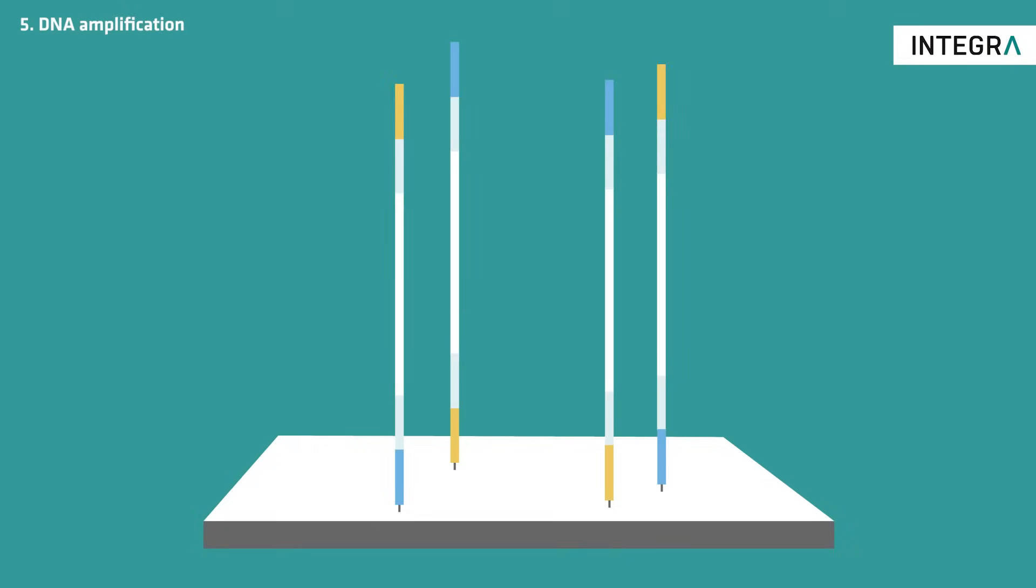Once there are about a thousand copies of each sequence in a cluster, one of the primers is cleaved off to ensure that you are left with only the forward or reverse strands.